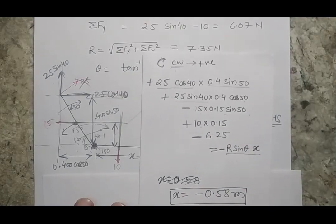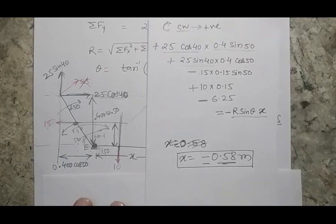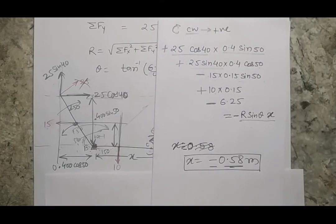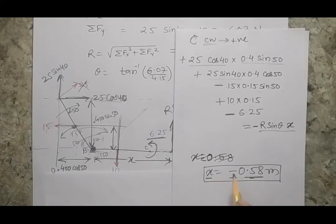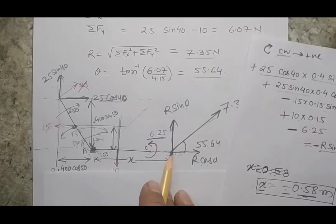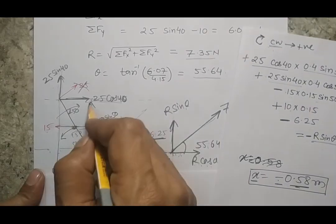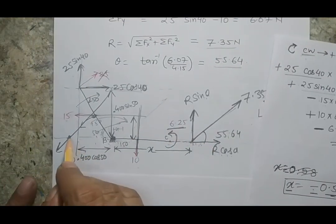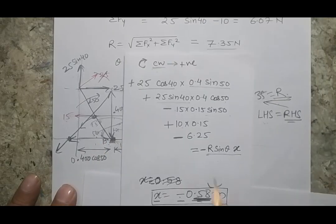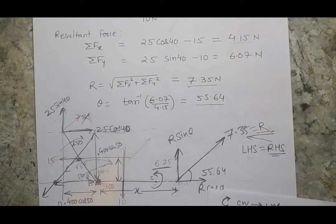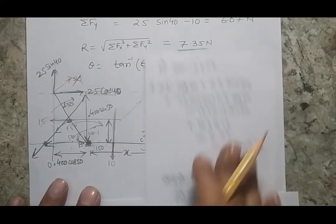Solving the moment balance equation gives x = −0.58 m. The negative value indicates that instead of the force being to the right of B, it is actually to the left side. This means the resultant force is passing from a point 0.58 m to the left of B along line BC. So the final answers are: resultant force magnitude 7.35 N, angle 55.64 degrees, and position 0.58 m from point B.